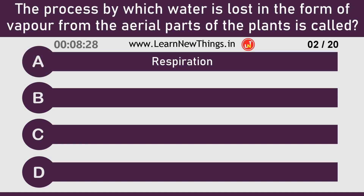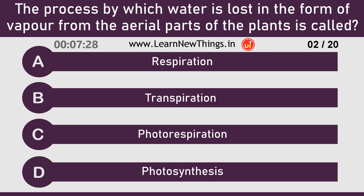The process by which water is lost in the form of vapor from the aerial parts of the plants is called Transpiration.